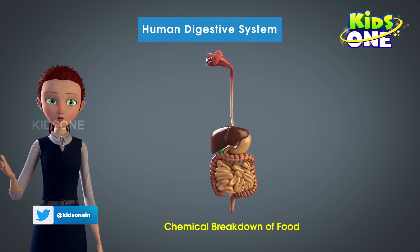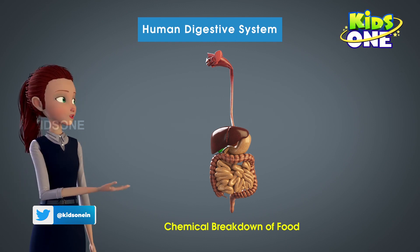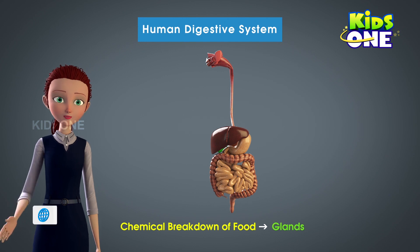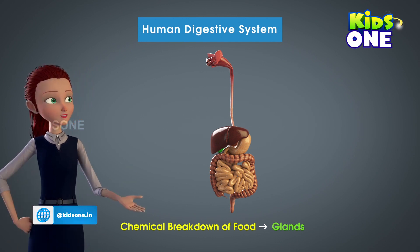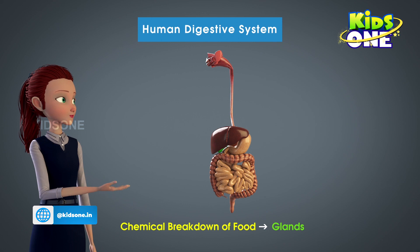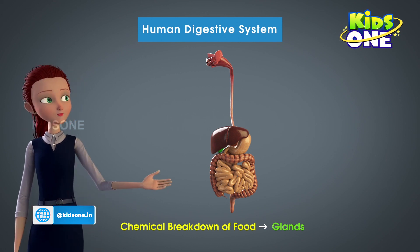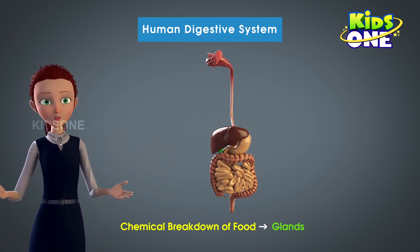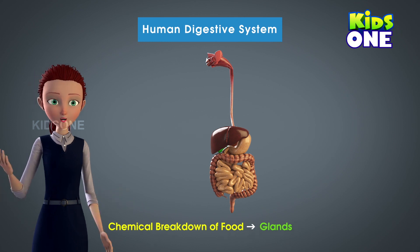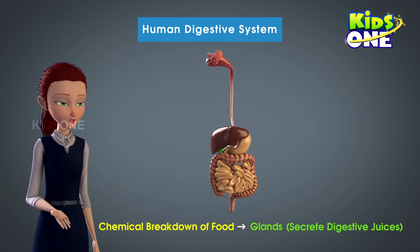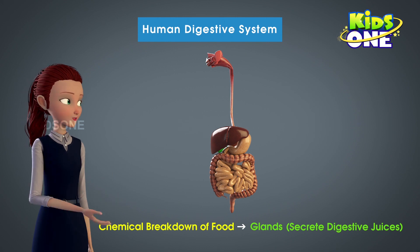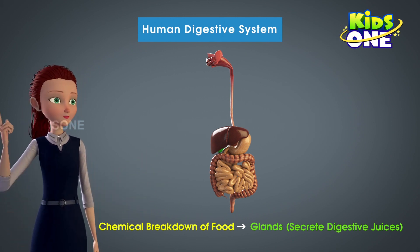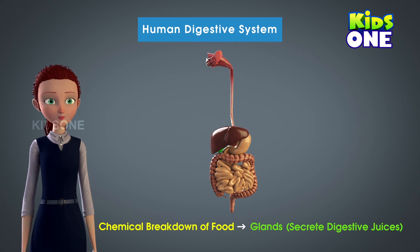The human body is a home to a host of organs. There are some specialized organs that secrete enzymes, which are helpful in a host of procedures in the human body. To aid in the process of digestion, there are glands all throughout the digestive system. They secrete digestive juices at various points. In this video, let us learn about the importance of each gland in the digestive system.